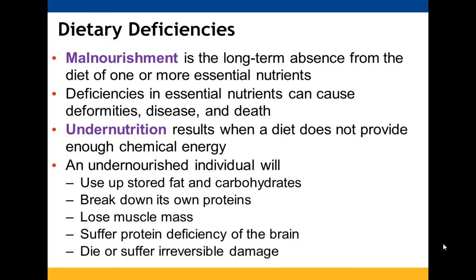Malnourishment is when you are missing something, and this can result in deformities, disease, or even death. Undernutrition is when you are not getting enough chemical energy from your diet. It will cause you to use up stored fat or carbohydrates, break down your own proteins, reduce your muscle mass, and can cause protein deficiencies for your brain, leading to long-term damage or death.